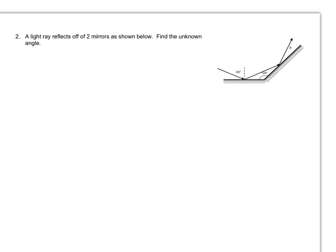Moving on to the next one. This one is mainly a geometry problem with a little bit of information about mirrors. We ultimately want to figure out what the unknown angle is, but I'll start at the first angle. I know that this angle is 63 degrees — that's given. This one, then, will be 90 minus 63, or 27 degrees.